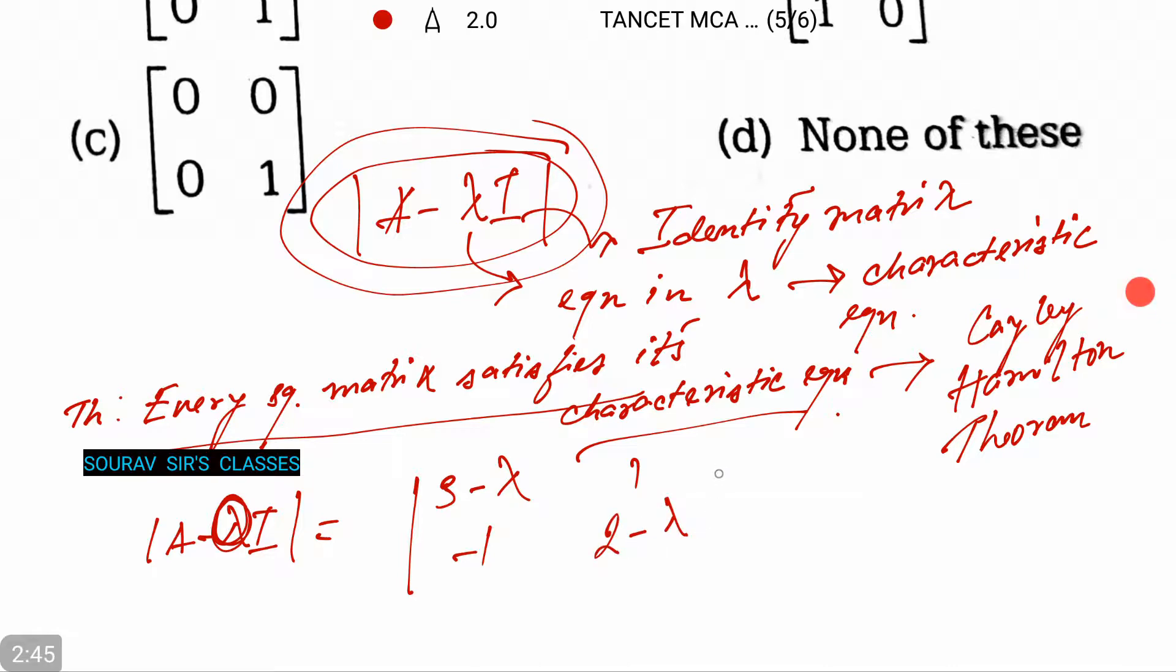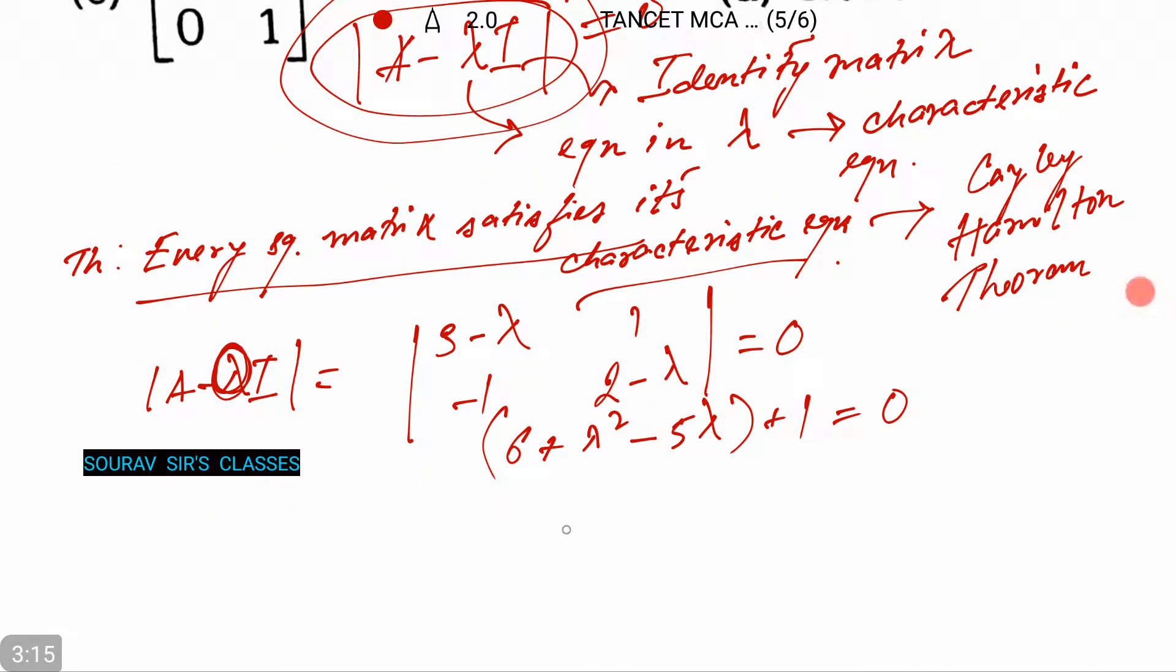Equals 0. So this will yield, if you can expand your determinant properly, 6 plus λ² minus 5λ plus 1 equals to 0. And this will eventually lead to λ² minus 5λ plus 7 equals to 0.